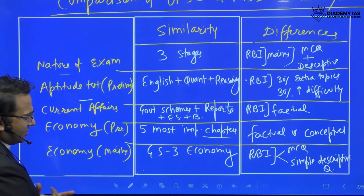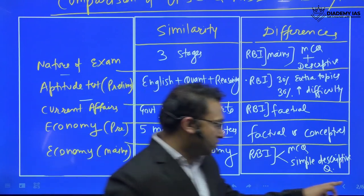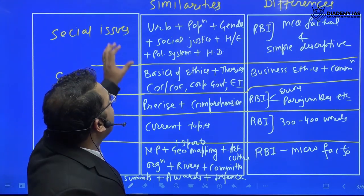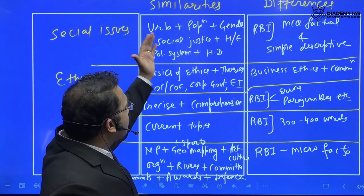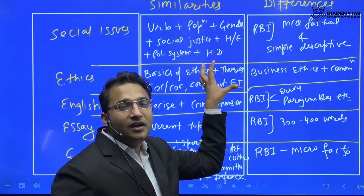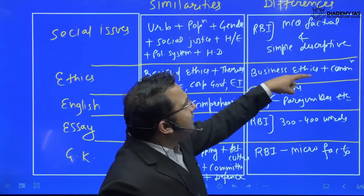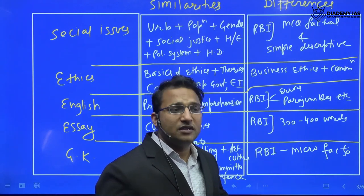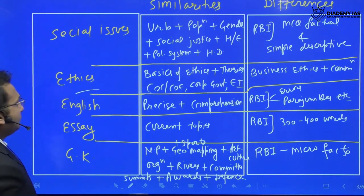For social issues, there are many common areas such as urbanization and migration, demographics and population, gender issues, social justice, health, education, Indian political system, and human development — most of which we already study in GS Paper 2 and in the prelims. In RBI, these are tested through MCQs and very simple descriptive questions; the descriptive section has only four questions, with two being quite easy.